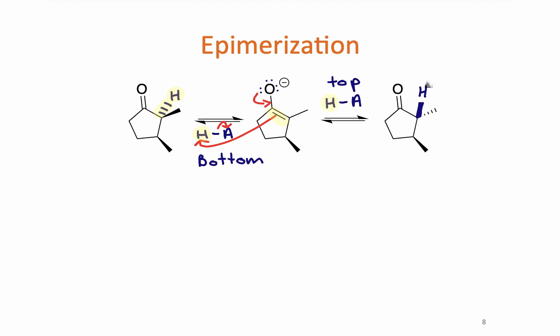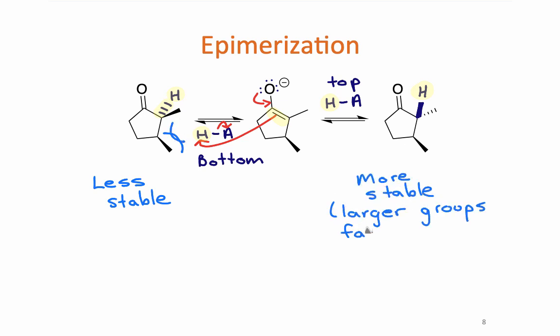The other possibility is if that proton attached to some leaving group comes in from the top side — the lone pair again comes down to take that proton, and this time it comes in at the top. Under equilibrium conditions, the more stable product is going to be formed. With the two methyl groups cis, there would be steric repulsion between those two groups. That is less stable than the situation where the methyl groups are trans, so the product on the right is more stable and the left is less stable.